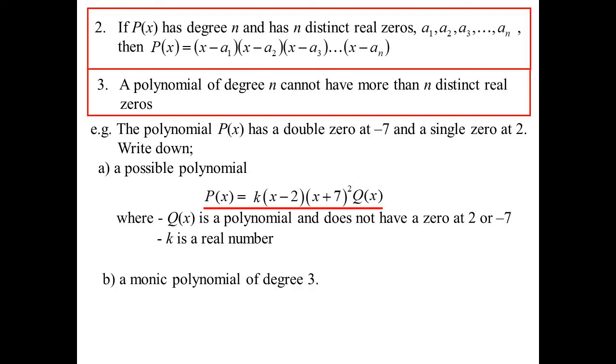What about if it was a monic polynomial of degree 3? So I'll start by writing down what I know and then say, what else could I have? Well, actually, there's nothing else I could have, because that is of degree 3. I've got three zeros, the double zero and the single zero. I can't have more than 3. So that's it. And it's monic, so it can't be times a constant. There is only one possible one I could put down for that one.